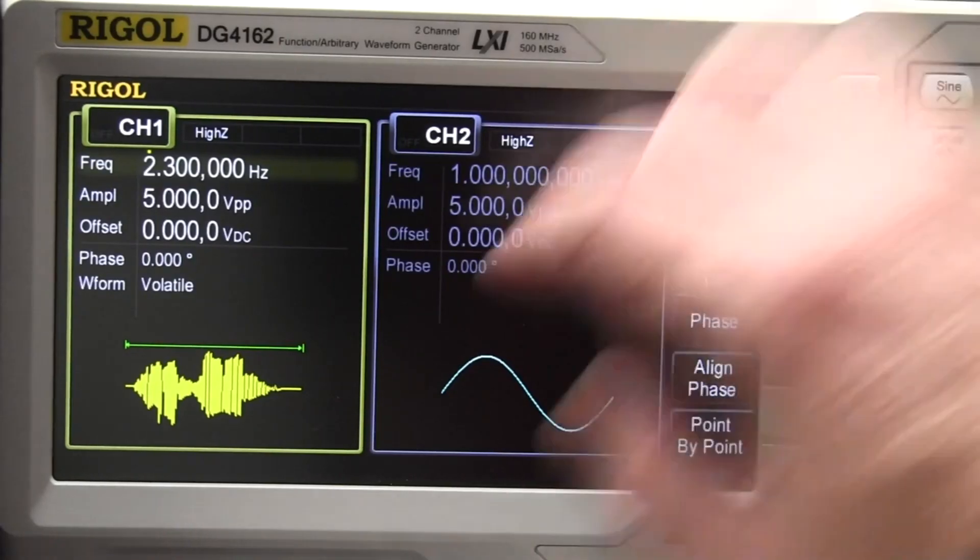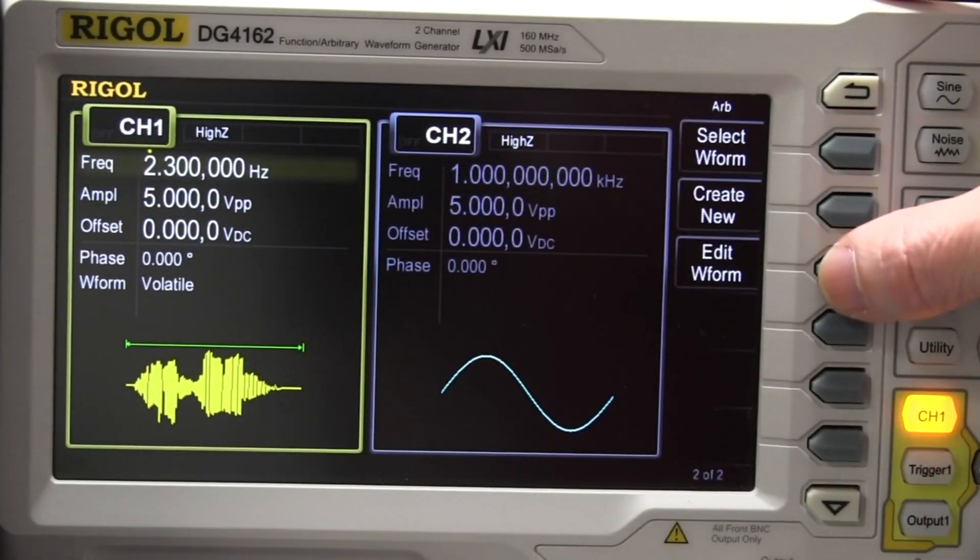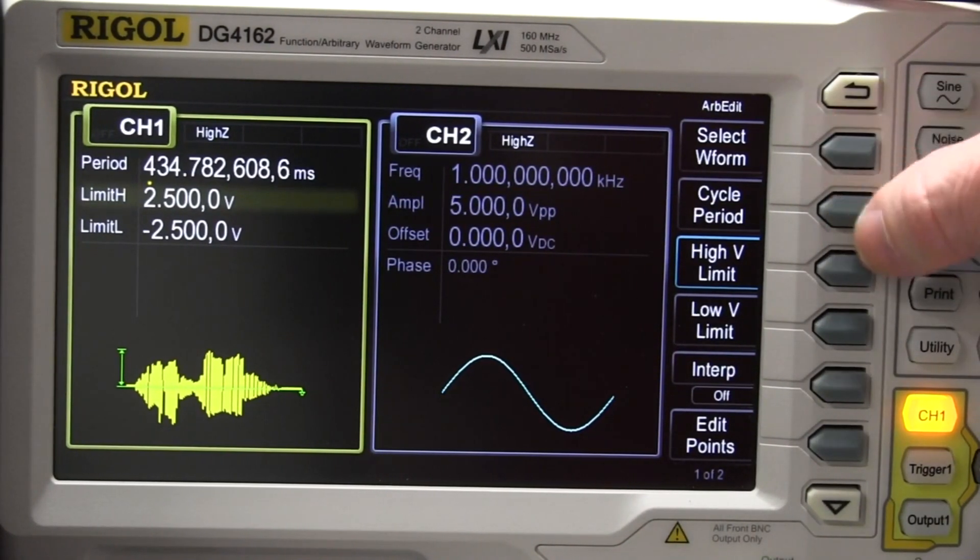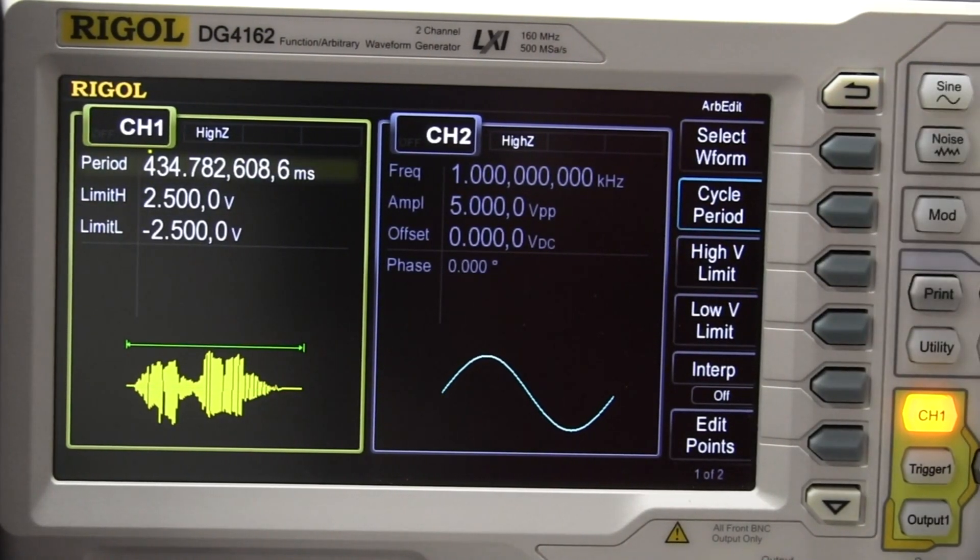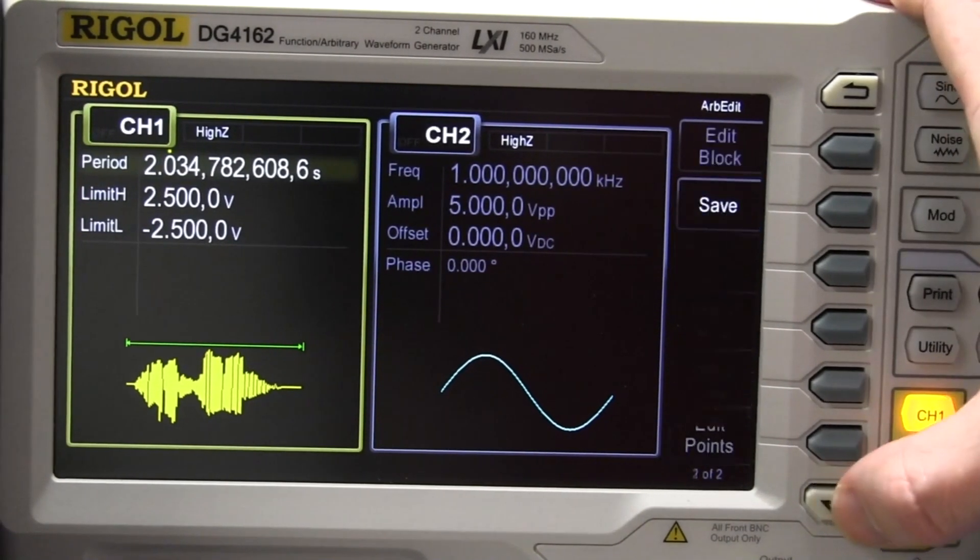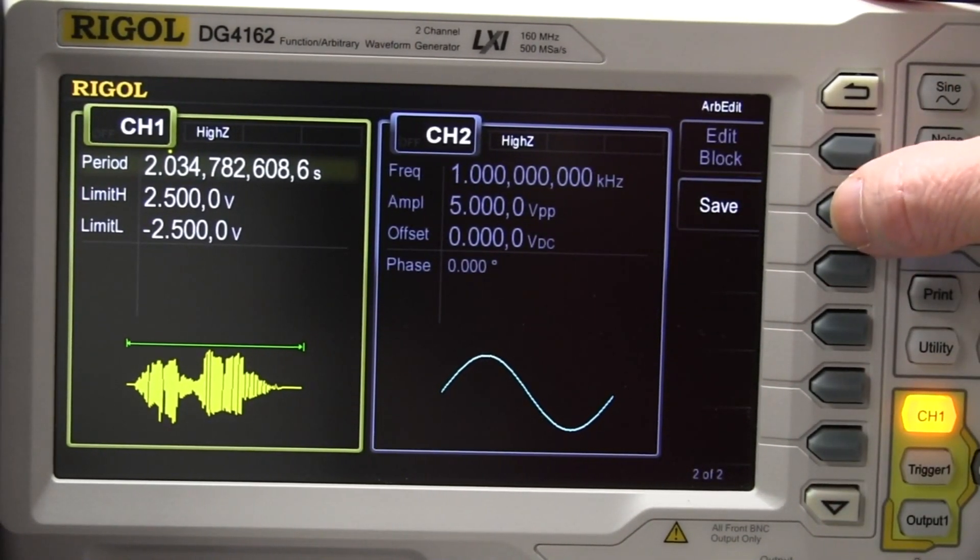And I'll try and edit that waveform to add in an extra pause after that. So let's go down to edit waveform here. I haven't tried this before, so, cycle period. Ah, here we go. So let's change the cycle period, shall we? Let's increase that to a couple of seconds. And let's try that. So how do we save? There we go. Once again, you've got to go down to another menu. So let's save it.